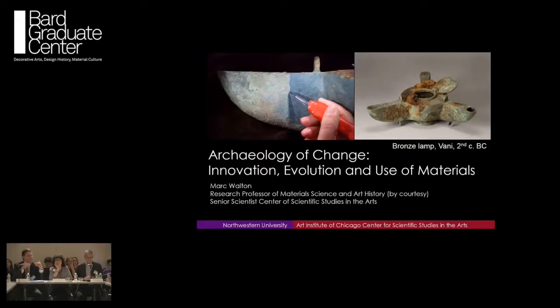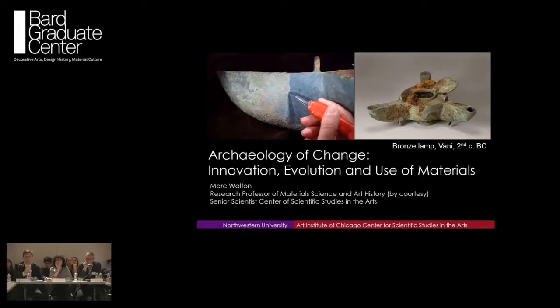Anyone who has dealt with metals conservation knows that the entire top surface has been mineralized. It's the intuition of the conservator — the look and the feel — trying to preserve the saline qualities that read as a metal surface. It's a plausibly imagined surface for that bronze object. Here's another example of a plausibly imagined surface: work done by my colleague Francesca Casadio at the Art Institute on a Renoir painting of Madame Clapisson dated to 1883.